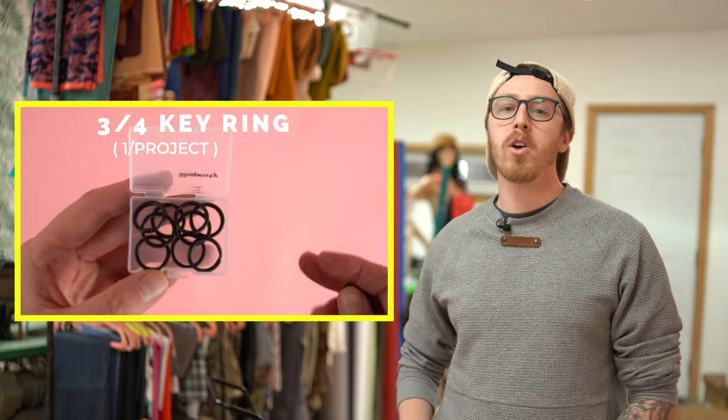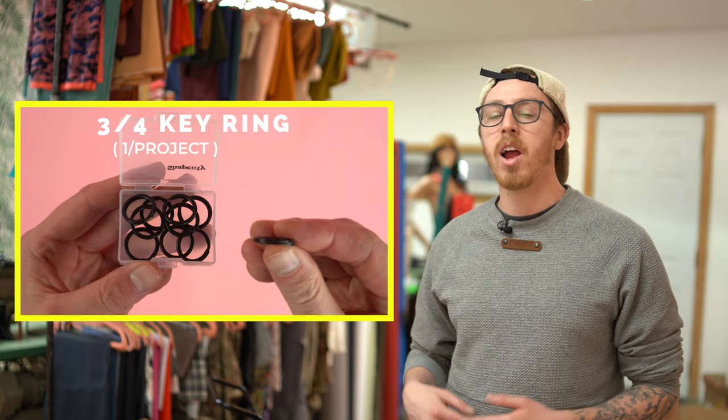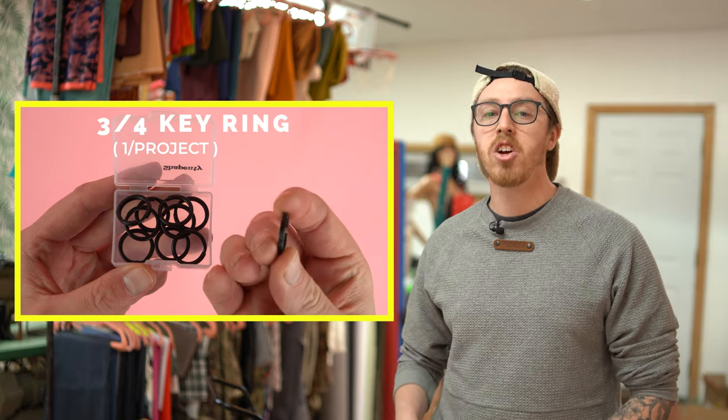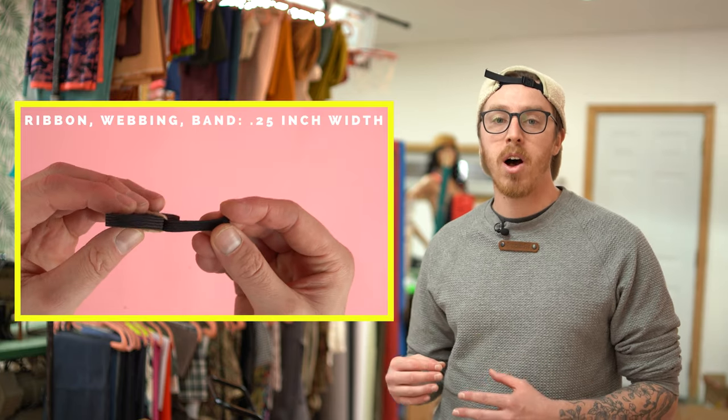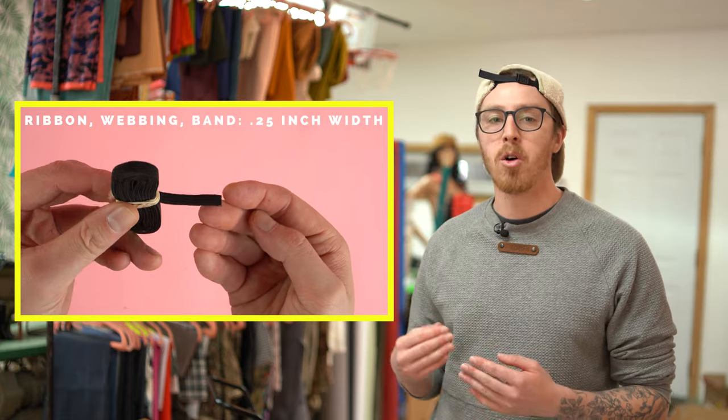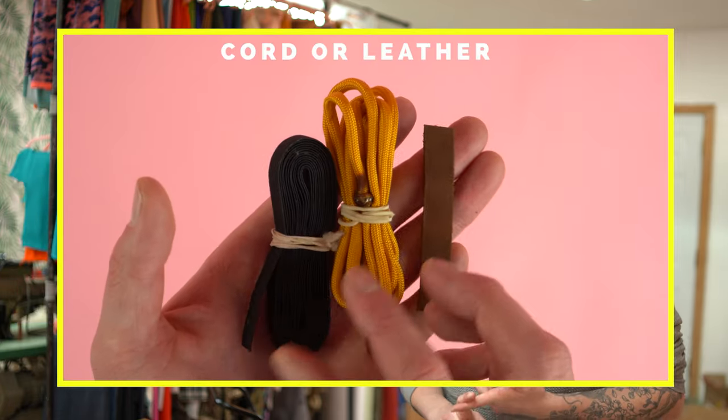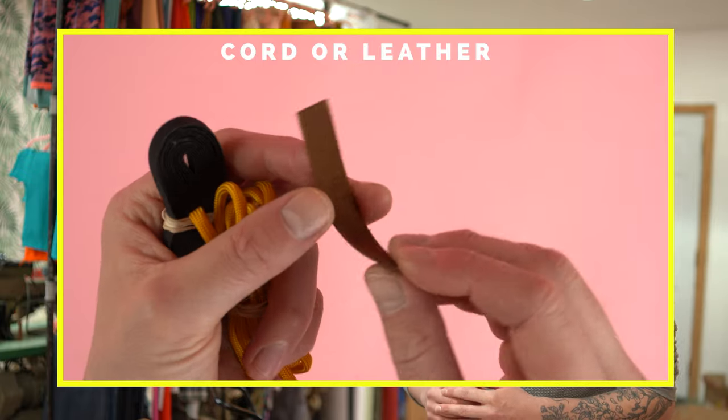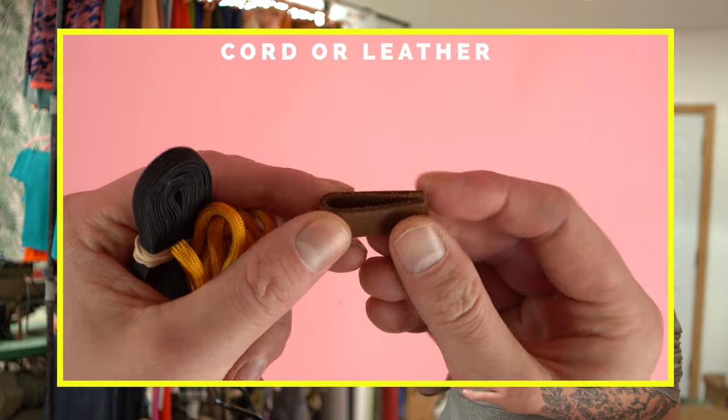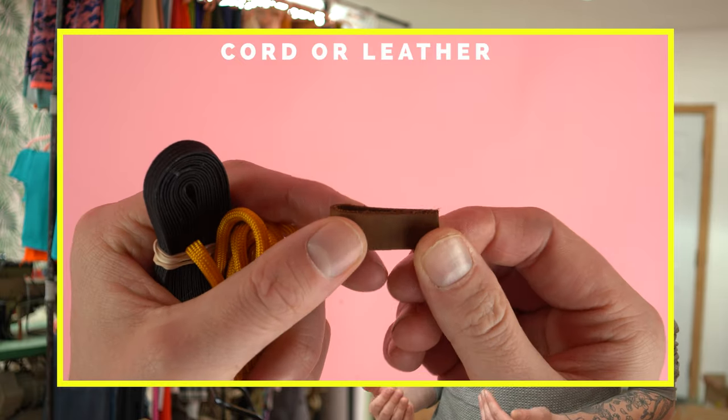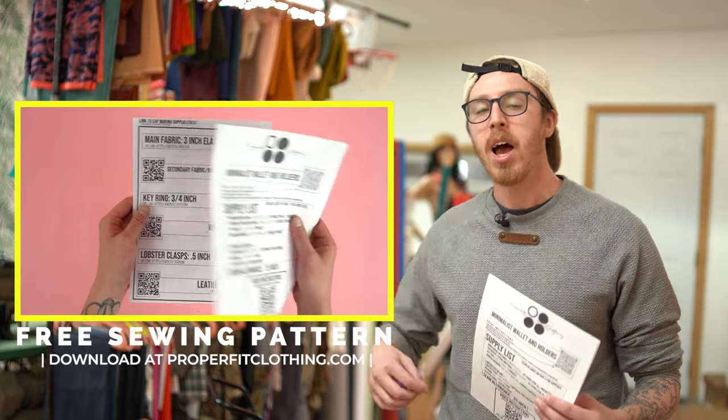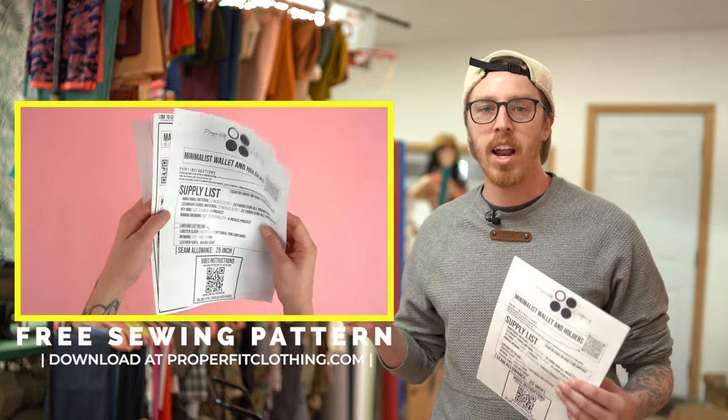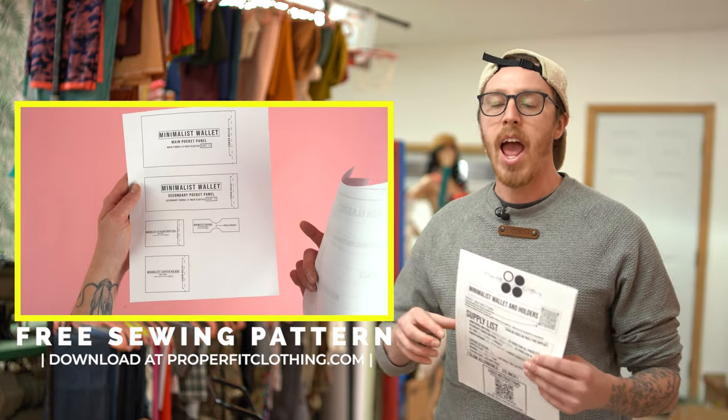You're gonna need one key ring. I use three quarter inch in the video. You're gonna need ribbon or webbing and I recommend getting a quarter inch width or smaller. You want it small enough to fit through your key ring with no problem. And there are a few more options. You can use cord or leather. I'm actually using leather in the video because if you're making the lanyard you're probably gonna have leftover leather. And last you're gonna need your pattern. This pattern is a free pattern and it's available at properfitclothing.com. Download it and you're ready to go.